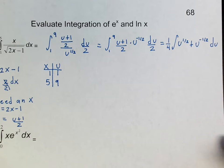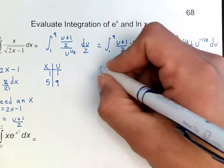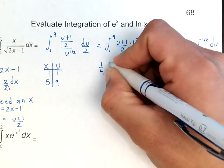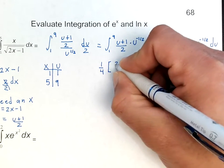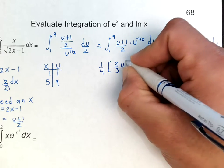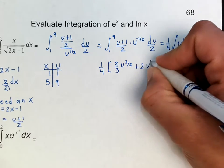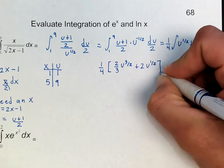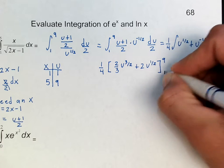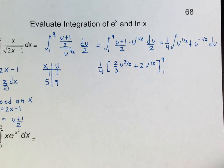Now, once I do that, I can go back and I can go ahead and integrate this. So I'm going to have 1 fourth, 2 thirds of u to the 3 halves plus 2 u to the 1 half. And I'm going to evaluate that between 1 and 9.